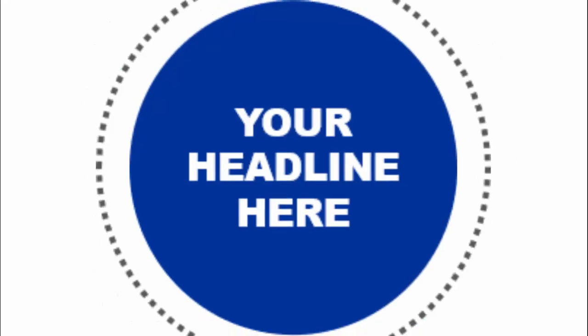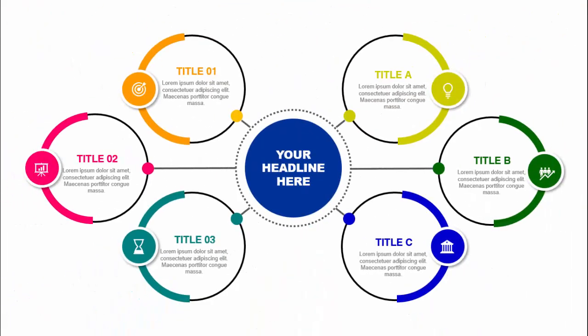In today's tutorial I'm going to show you how to create a seven circles infographic slide in PowerPoint. When clicked, you can see the seven circles appear. The first one in the center is for your title or headline. Then I have added three circles to the right and three circles to the left, with titles A, B, C and one, two, three, with different icons and color combinations.